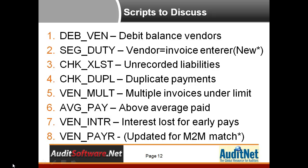In the duplicate payments test — everyone knows how to do a duplicate payment test — but what we're also doing here is trying to identify a potential duplicate item that has a credit reducing it, almost like a phony duplicate, and I'll explain more. The vendor multiple script is where you have multiple invoices under an approval limit, trying to purchase something much more expensive than your approval limit allows, so the vendor invoices you a few times.